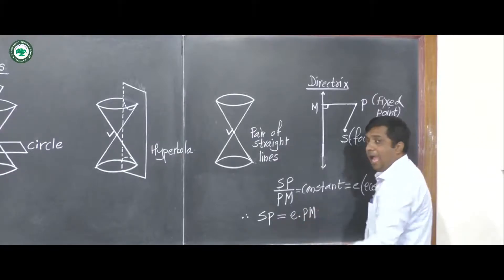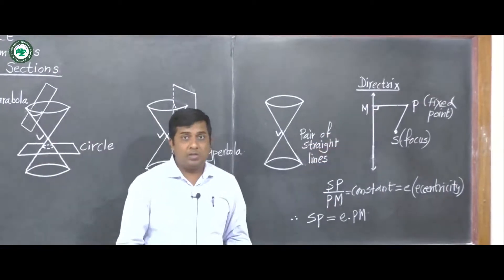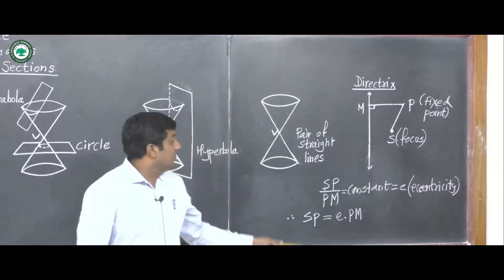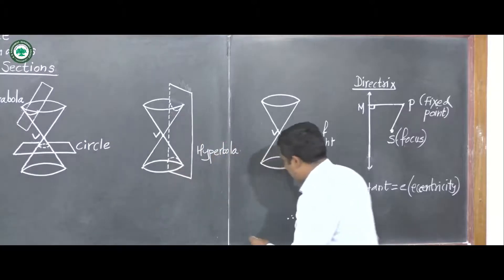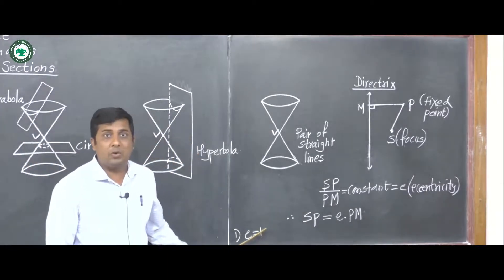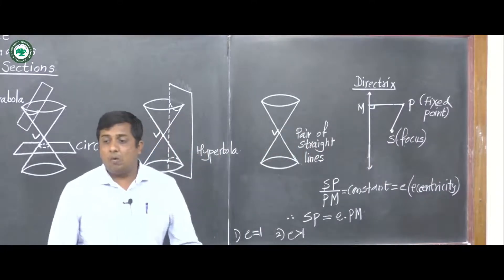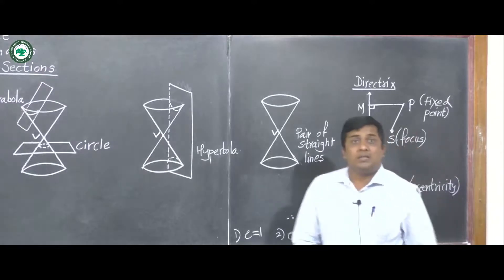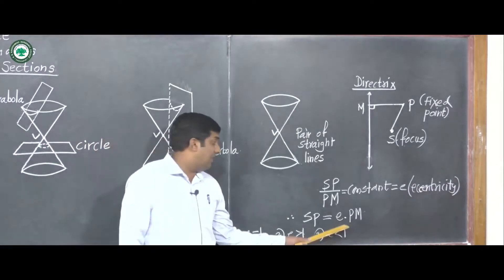This gives us the relation SP = e × PM, which is called the focus-directrix property. Everything depends on the value of e: if e equals 1 the conic is a parabola; if e is greater than 1 it is an ellipse.